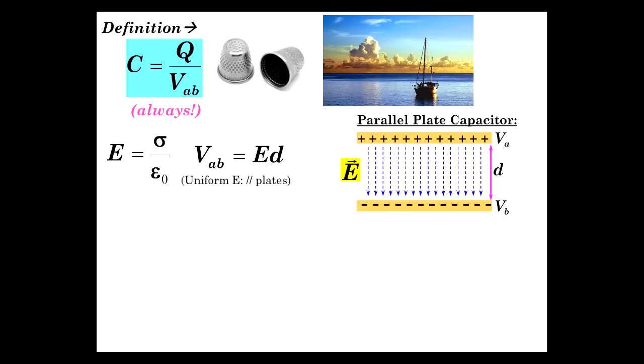The electric field between two parallel plates we've already seen is sigma over epsilon zero. We've done the analysis of that. If you don't remember, put a Gaussian surface in here somewhere and prove it. Now, V_AB, the voltage, is equal to the electric field times d. Remember, integral of E dot dl is equal to V_AB. And, uniform electric field, parallel plates, it's just E times d. Very simple. So, E is V_AB over D. So, there is our definition of electric field.